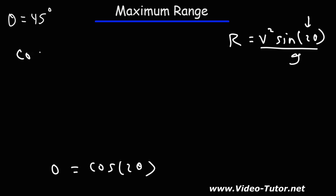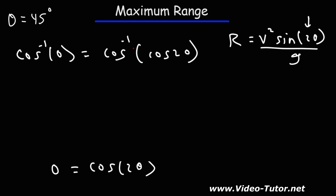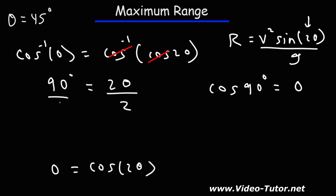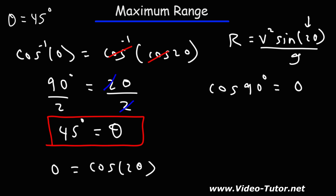Now we take the arc cosine, or inverse cosine, of both sides. The arc cosine and cosine cancel, giving us 2 theta. The arc cosine of 0 is 90 degrees — you can verify this in your calculator in degree mode, since cosine of 90 degrees is 0. To get theta by itself we divide both sides by 2, and so theta is half of 90 — it's 45 degrees.